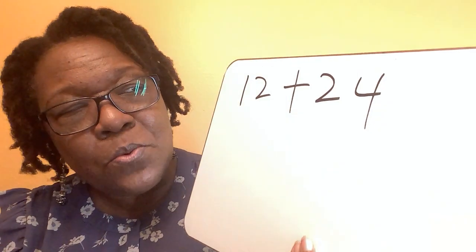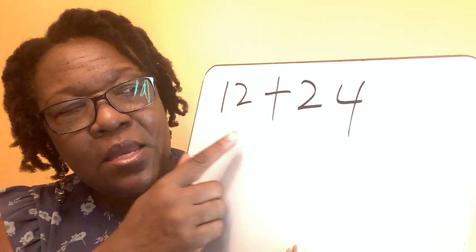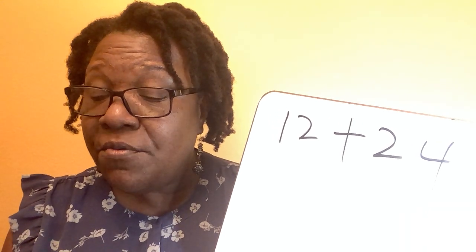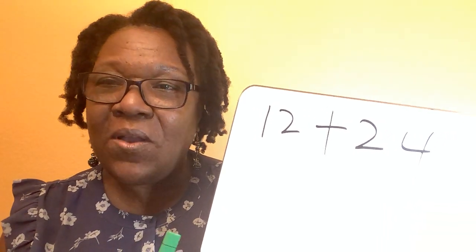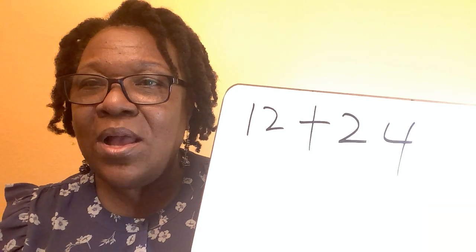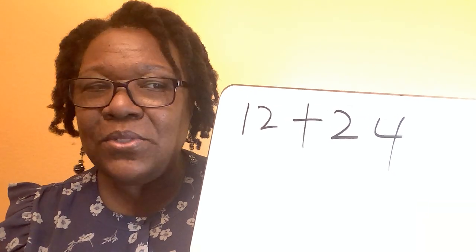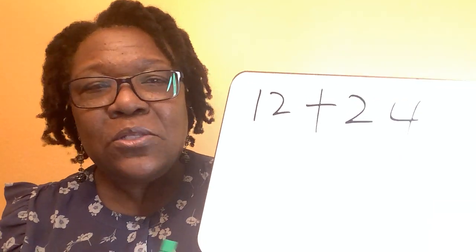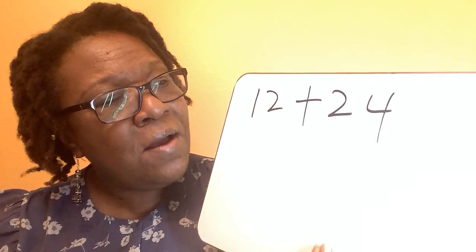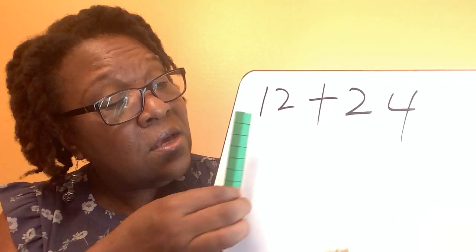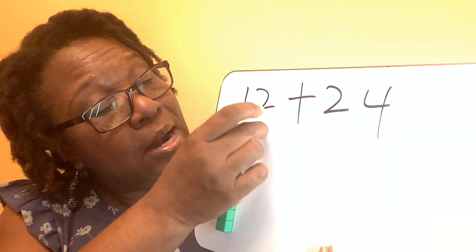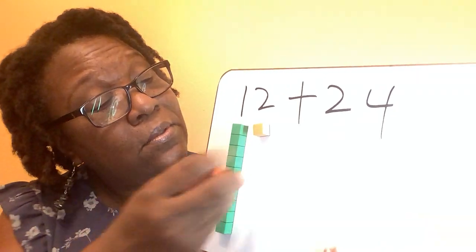I have here on my board 12 plus 24. Remember what Miss Jerome said — in order for your child to understand the concept of using tens and ones, he or she must be able to count by tens and must be able to recognize numbers. So let's do 12 plus 24.